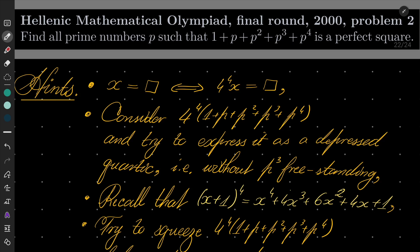A classic problem from number theory. So, my hints. First of all, notice that some number x is a square if and only if 4 to the 4th power times x is square as well.